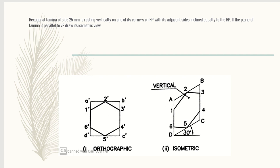A problem is given as: a hexagonal lamina of side 25 mm is resting vertically on one of its corners on HP, with its adjacent sides inclined equally to HP. You can see the adjacent sides — these are adjacent sides — inclined equally to HP.